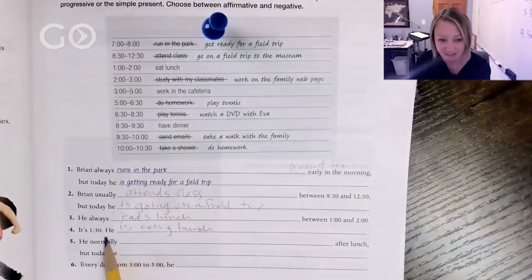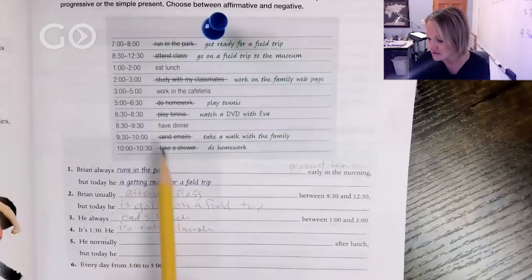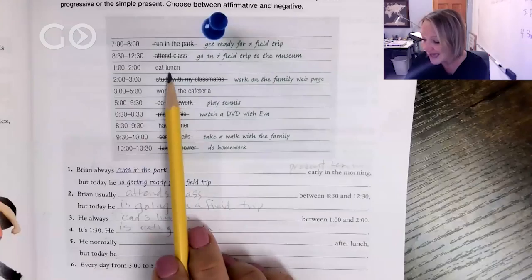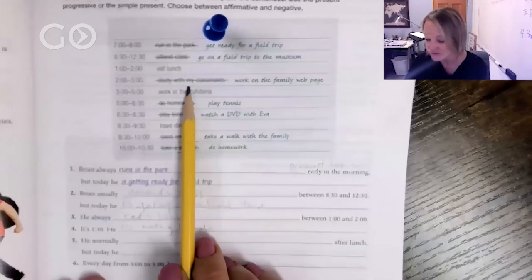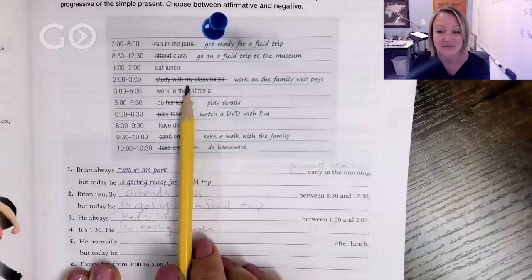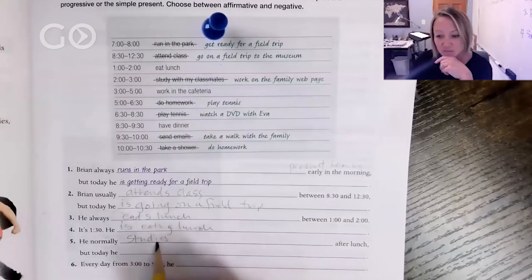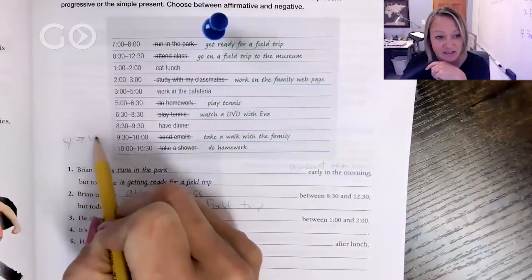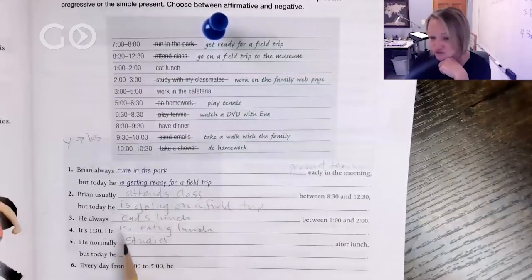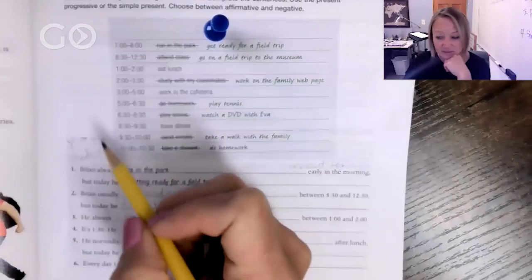All right, number five has two blanks. He normally blank after lunch, but today he blank. So normally after lunch—here's lunch—after, he normally, okay let's do this one. What does he normally do? We're going to use the present tense because it's something he normally does. So he normally studies. Now notice what happened here. The word is study, we changed that y to an i-e-s. That is what happens with y. So we change that spelling. We don't say 'he studys,' that's not what we say. We use i-e-s.